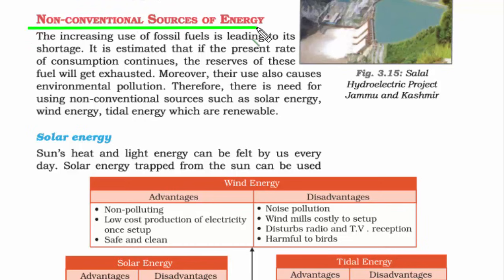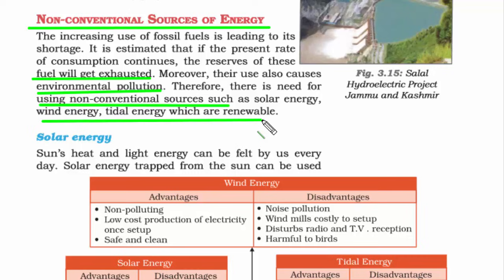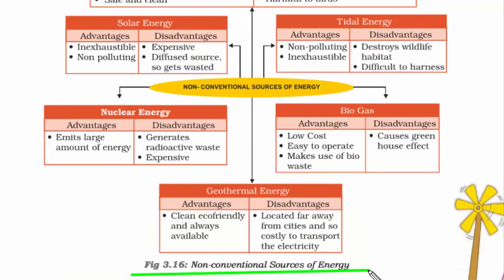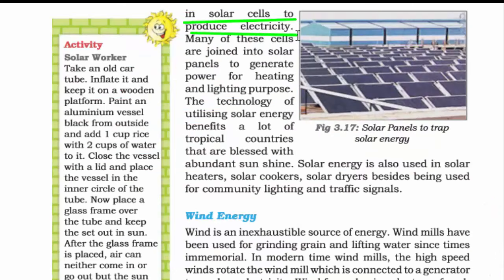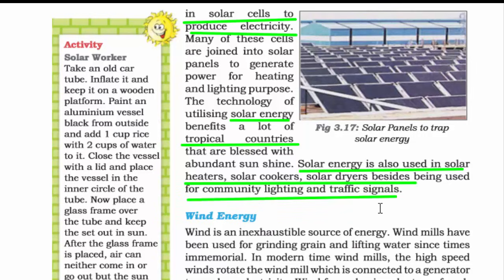Non-conventional sources of energy are also called unusual sources. Fuel reserves are getting exhausted and fossil fuels cause environmental pollution. Therefore we need to move towards non-conventional sources such as solar energy, wind energy, and tidal energy, which are renewable. With the help of solar cells we can produce electricity. Most tropical countries benefit from solar energy as they receive ample sunshine. Uses of solar energy include solar heaters, solar cookers, solar dryers, and lighting for traffic signals.